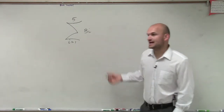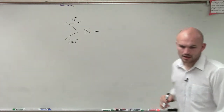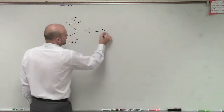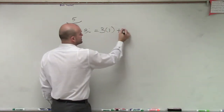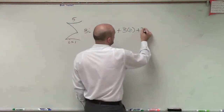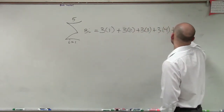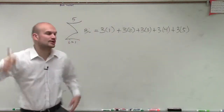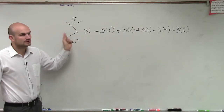So what this represents is going to be the sum. What this is going to equal is the sum of 3 times 1, which is going to be my first term — first term would be 1 — plus 3 times 2, plus 3 times 3, plus 3 times 4, plus 3 times 5. I'm going to end at 5, because that's going to be my terminal term. I start at 1 when I plug in.